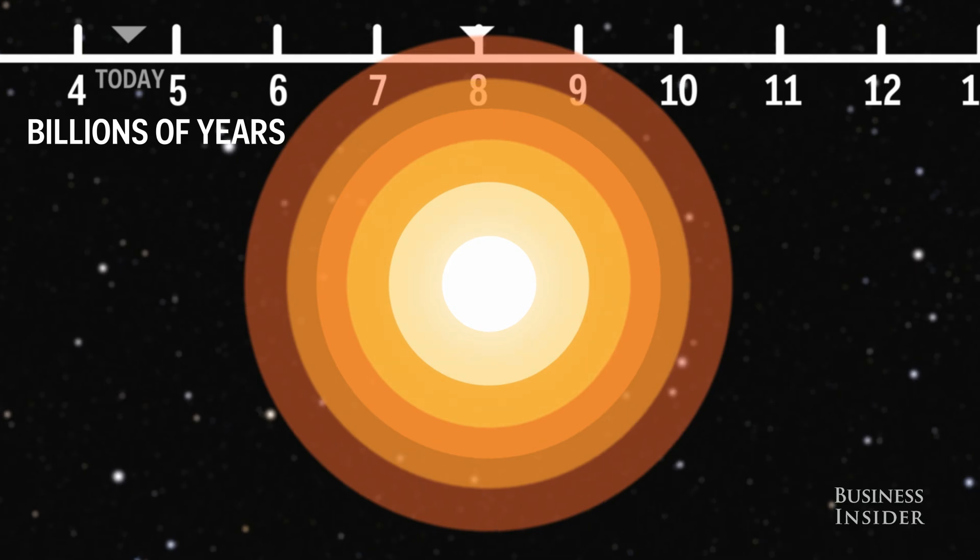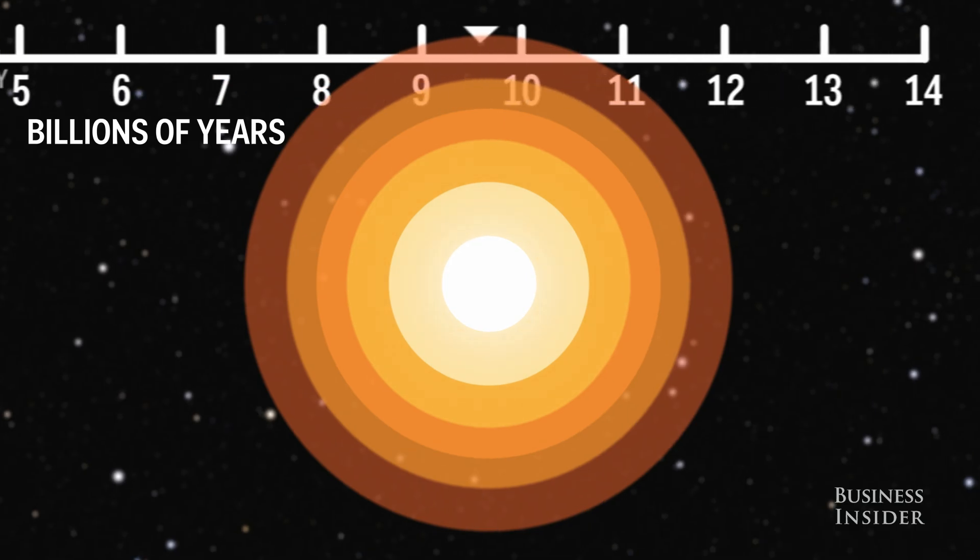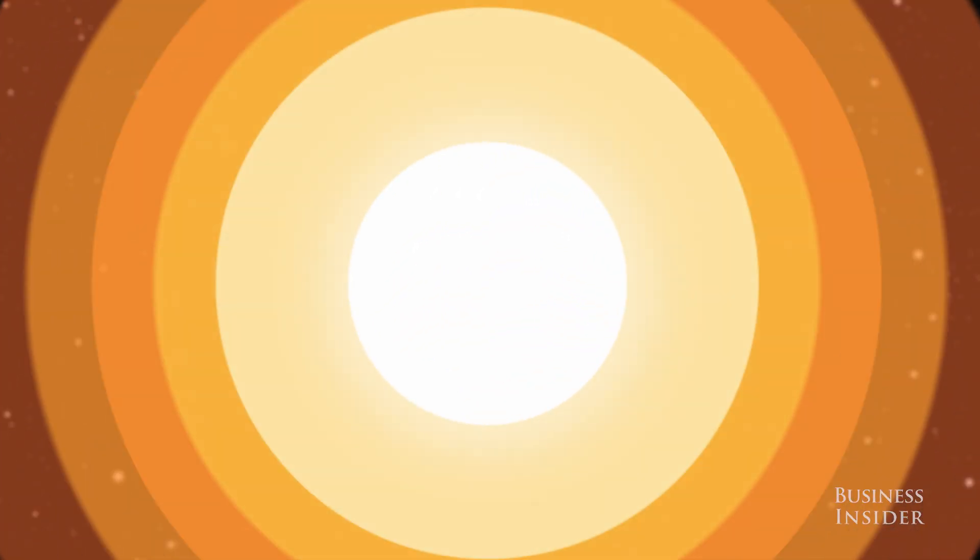After that, the situation gets worse. 5.4 billion years from now, the Sun will exhaust all hydrogen in its core.